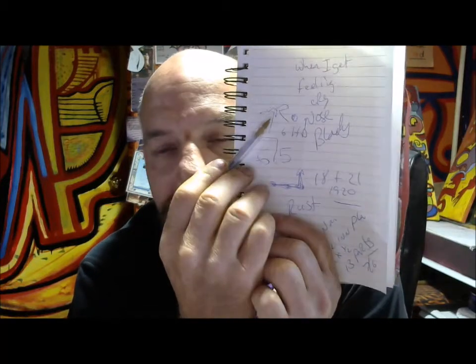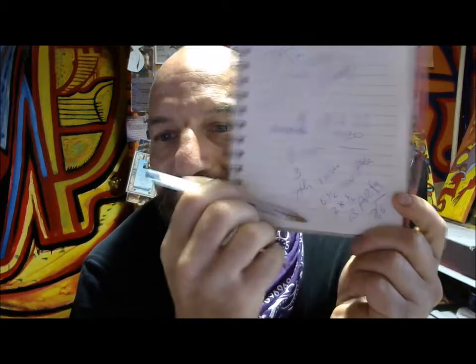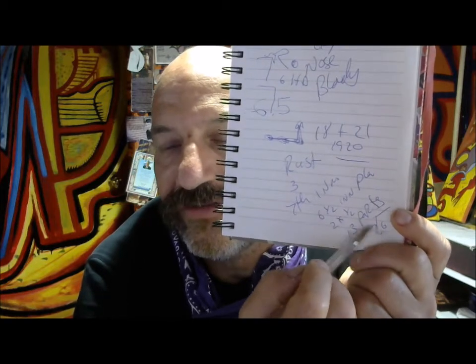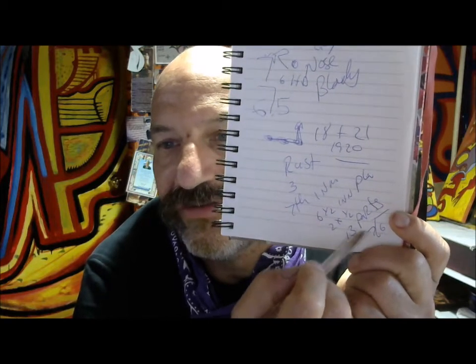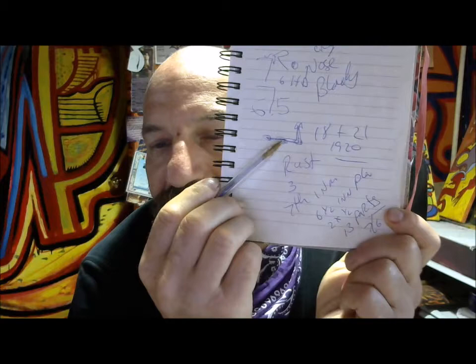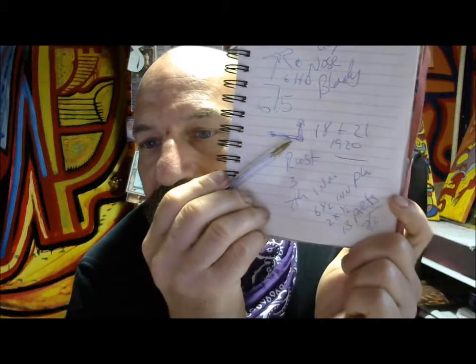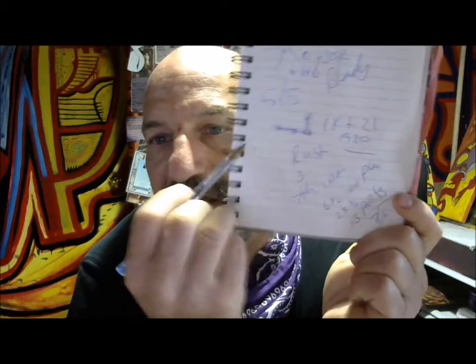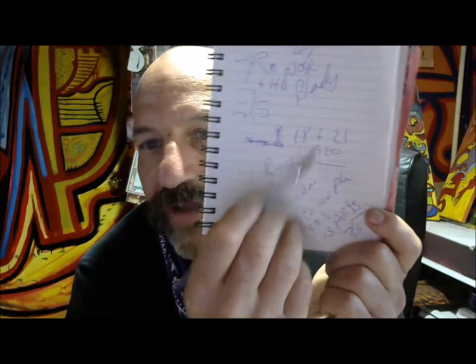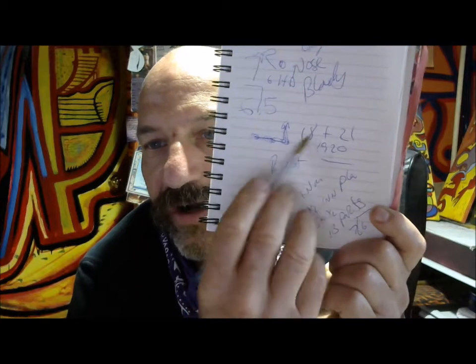Inside the seventh inning, we have 13. 13 parts of half equals six and a half. Seven and six and six and seven equals 44 area space. This creates the letter L. And the outs in the inning are 18 for one team, 21 for the other, equaling R and U.